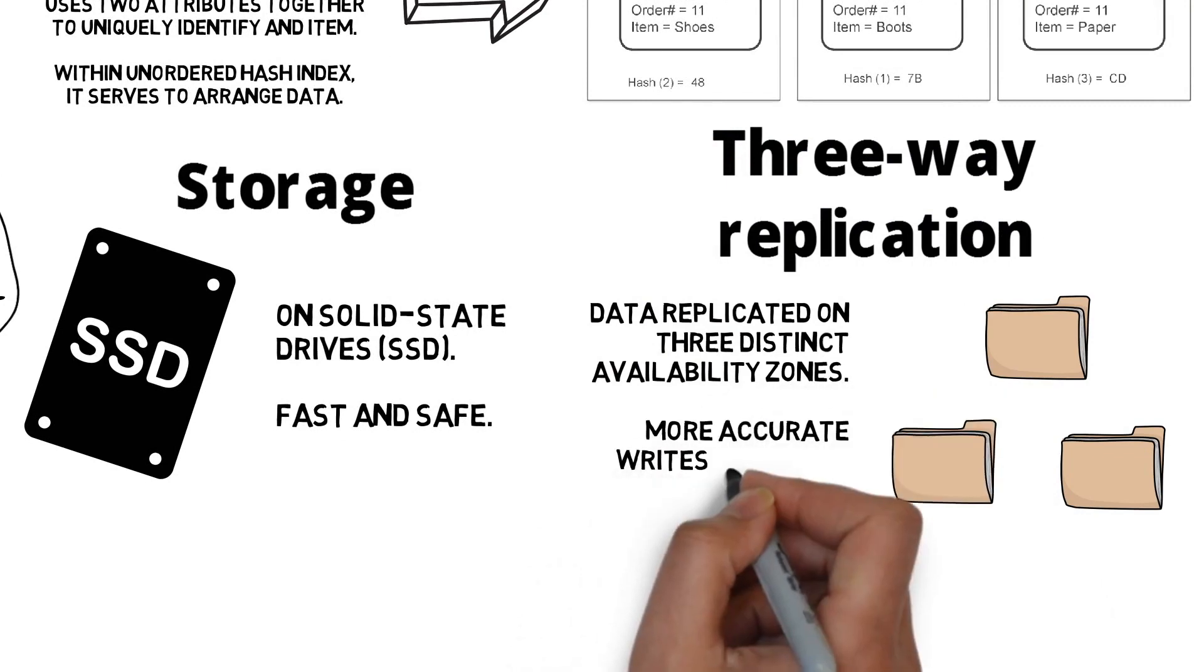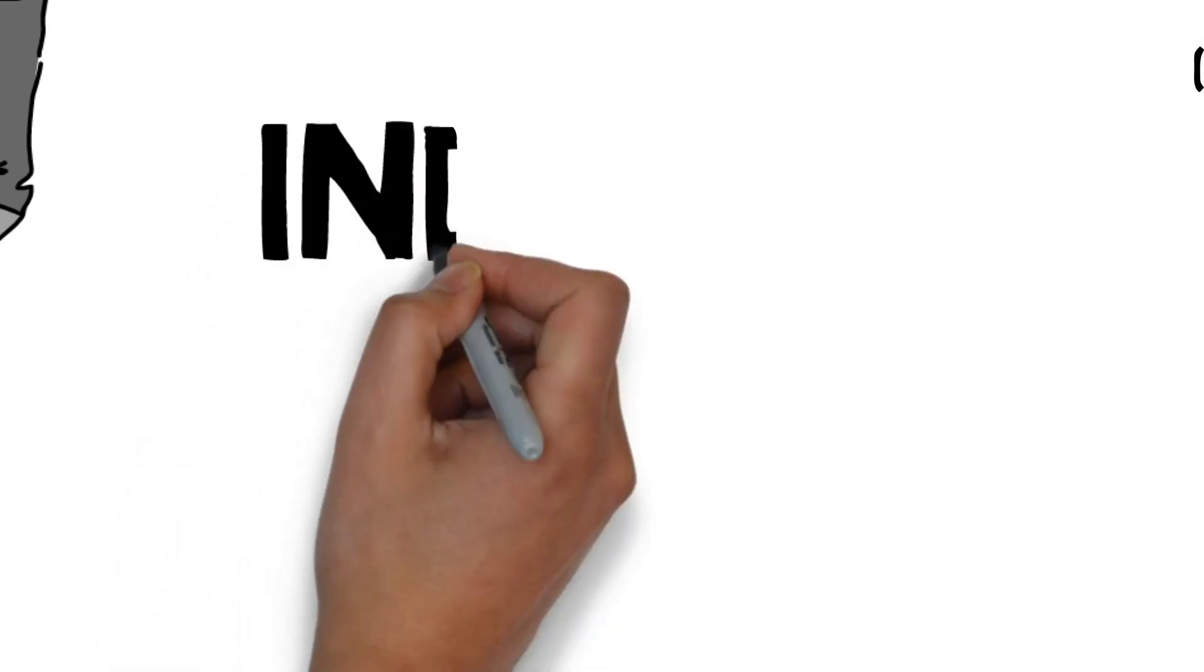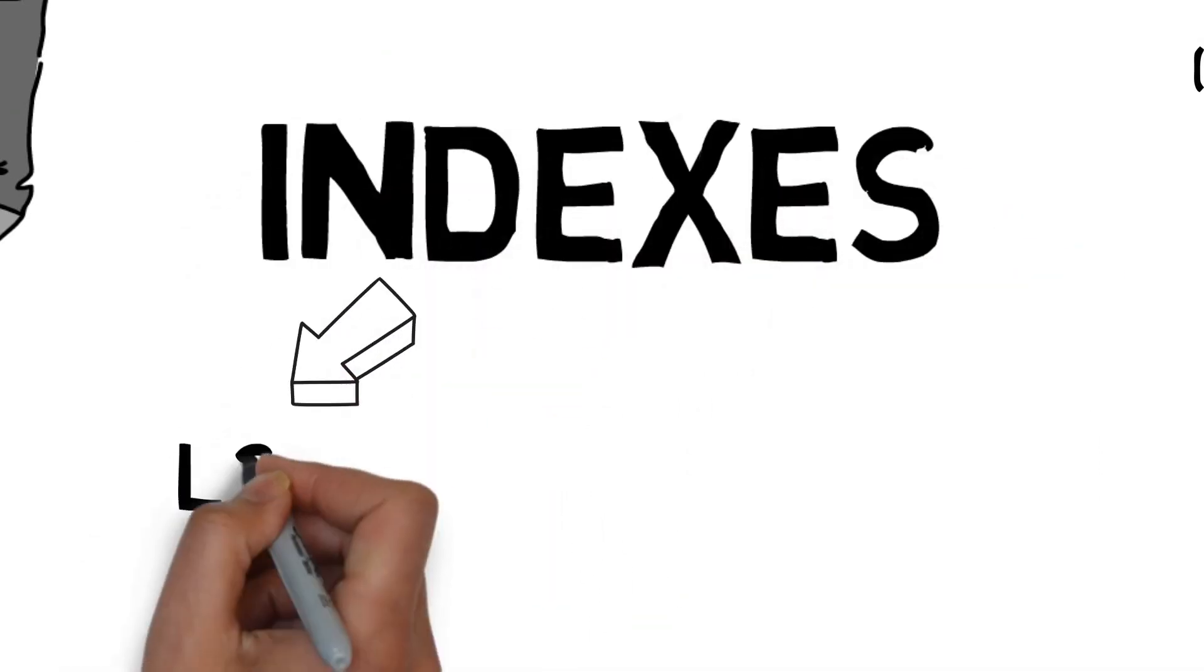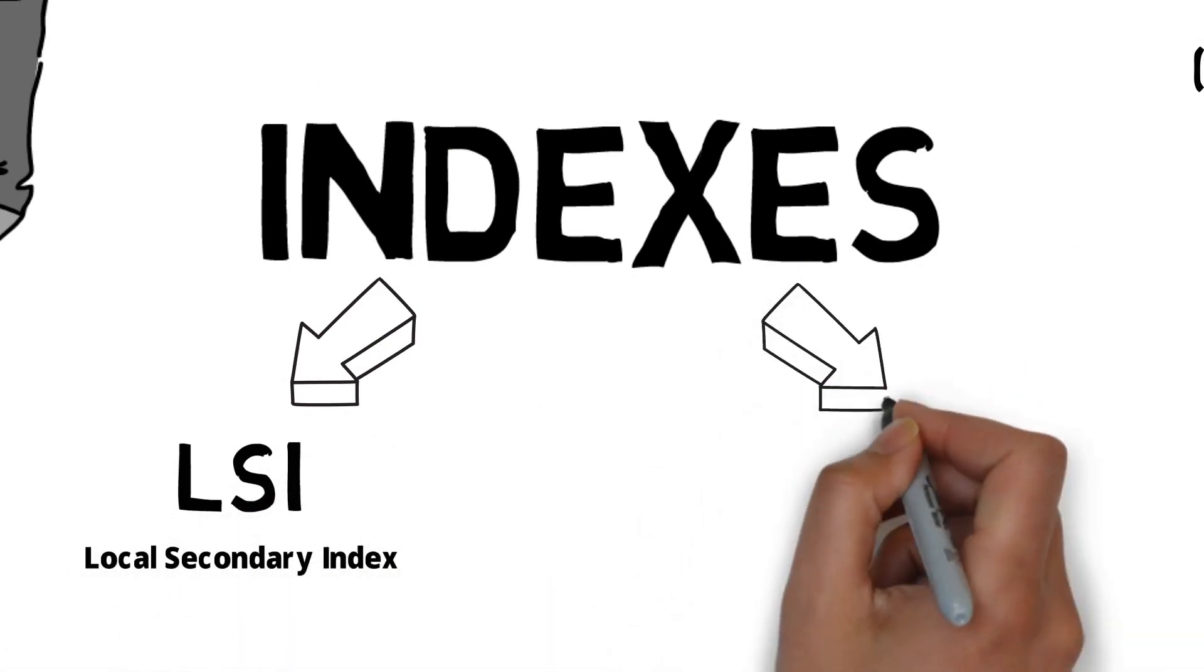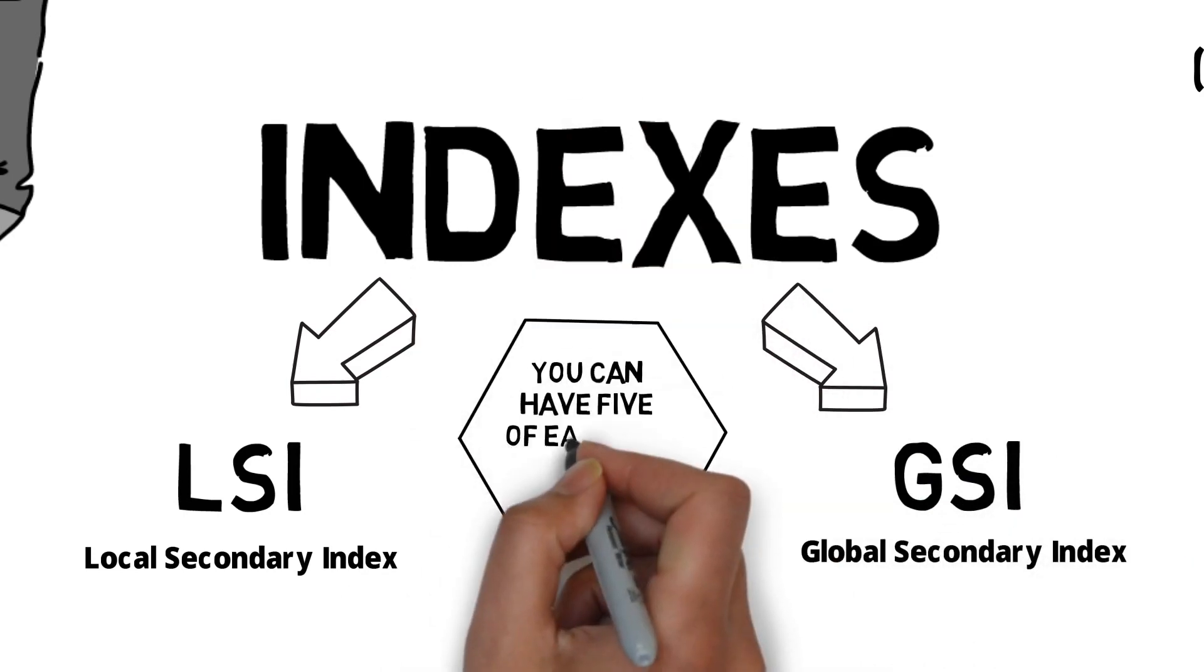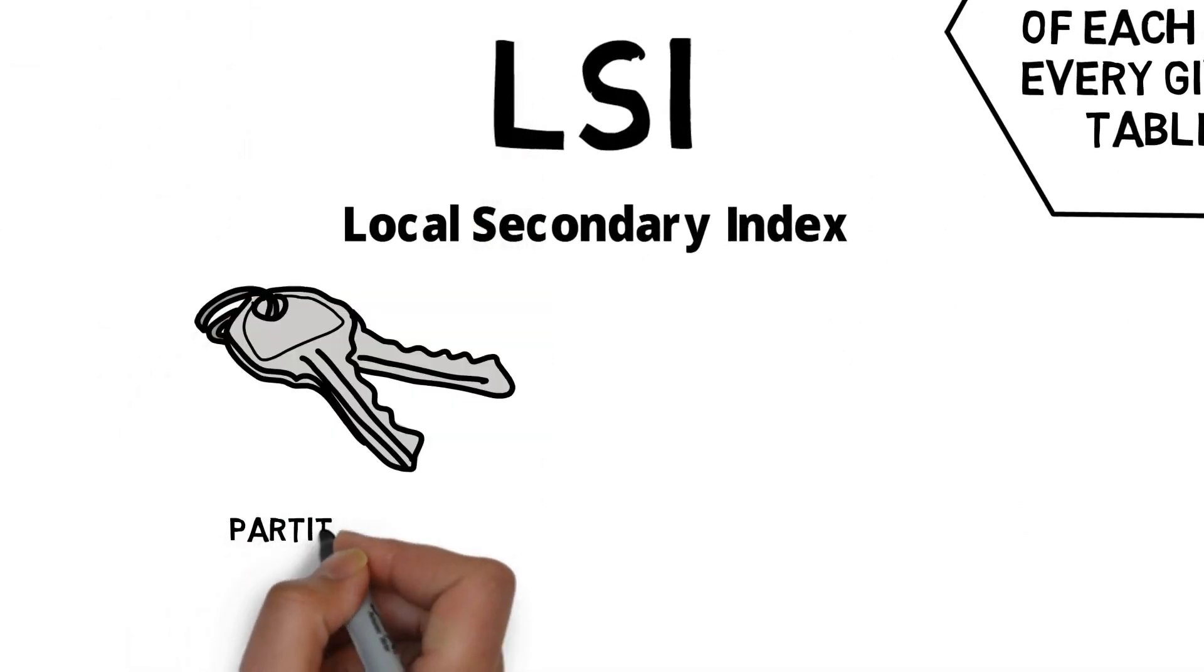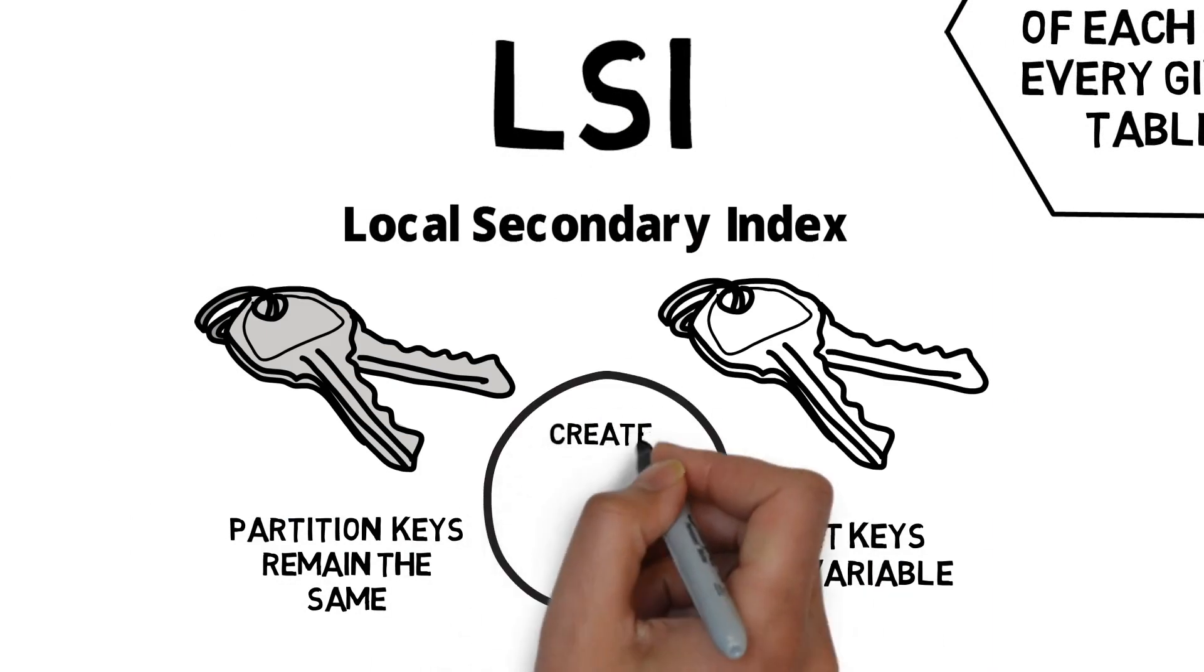Now to the final topic of indexes. We have two types: LSI, local secondary index, and GSI, global secondary index. There are five of each for every given table. A local secondary index has partition keys which remain the same. Sort keys are variable, and alternate versions of those keys are created for the same table.